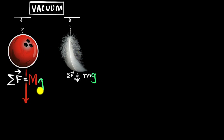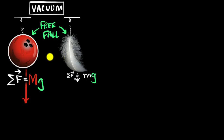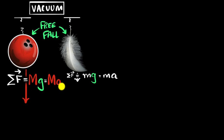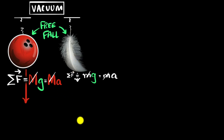Whenever gravity is the only force acting on an object, we say that object is in free fall. So our bowling ball and our feather are currently in free fall. To analyze how they fall, we use Newton's second law: the net force equals mass times acceleration. When you do that, look at what happens — the bowling ball's mass cancels out, and the feather's mass cancels out. Which means the acceleration of the bowling ball is g, and the acceleration of the feather is also g. It's exactly the same, and therefore they fall at the same rate.